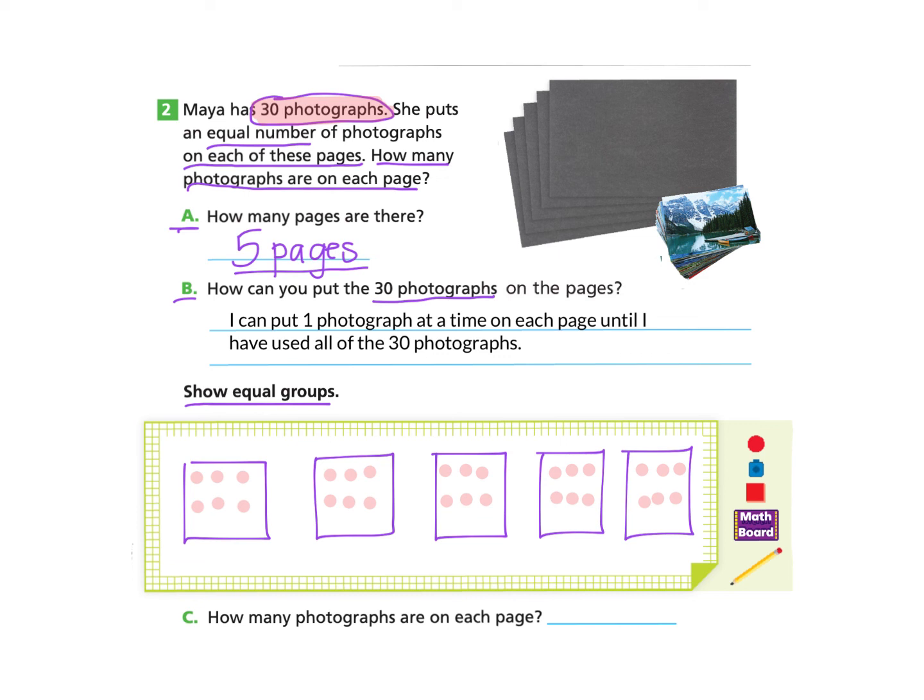So now we are able to answer the part C that asks how many photographs are on each page. You can count how many photographs are on each page and find that there are six on each page. So we can write our answer, six photographs.